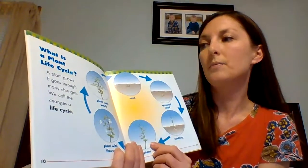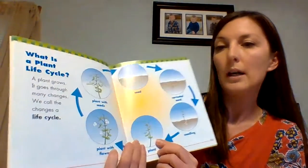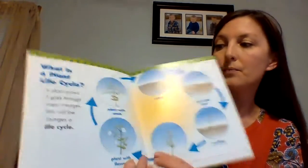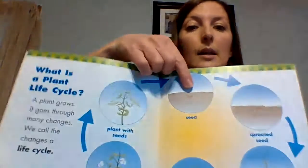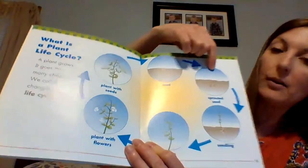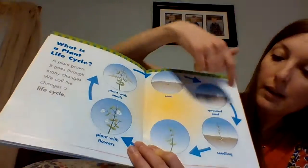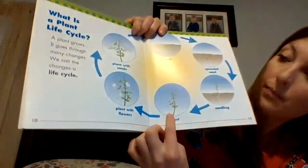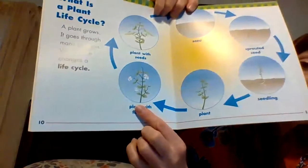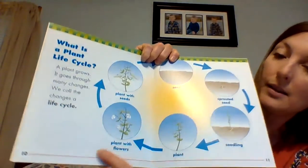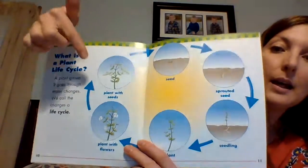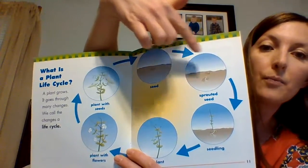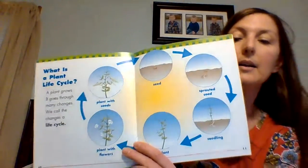What is a plant life cycle? A plant grows — it goes through many changes. We call the changes a life cycle. So here you see the seed, and then the sprouted seed, seedling, the plant, plant with flowers, plant with seeds. And then that plant with seeds will cause more seeds to grow, and the whole cycle will happen again and again.